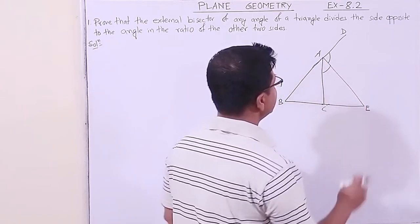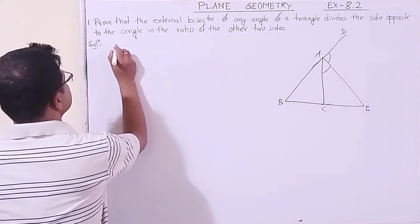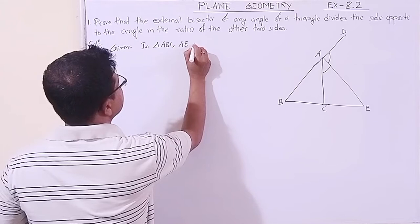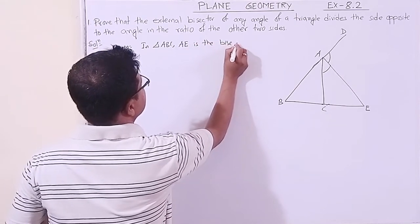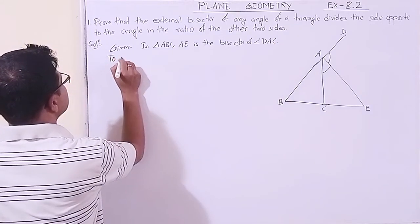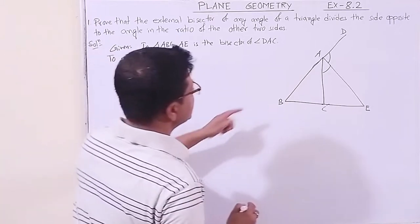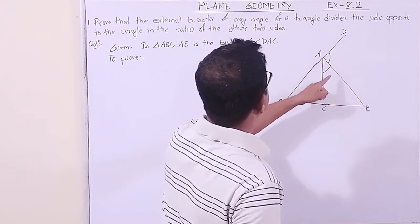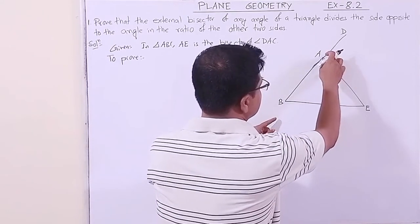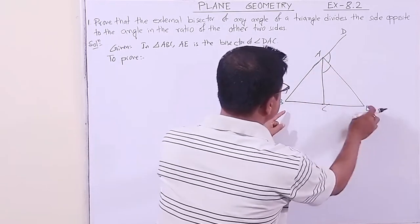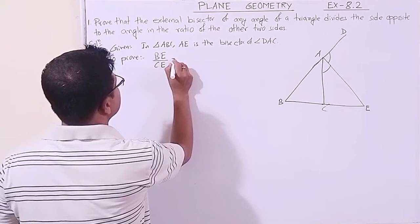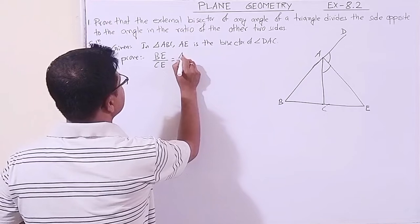Given: In triangle ABC, AE bisects angle DAC, the external angle. To prove: BE by CE equals AB by AC. Name the angles: angle 1, angle 2, angle 3, angle 4. Construction: For point C, draw CF parallel to EA.